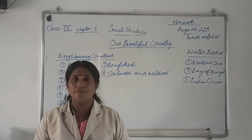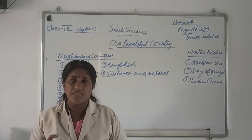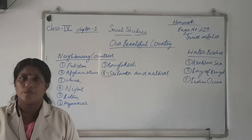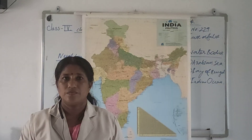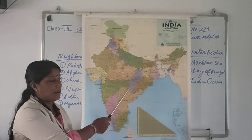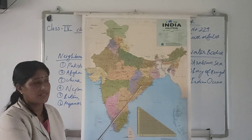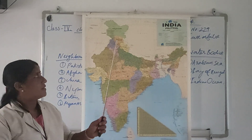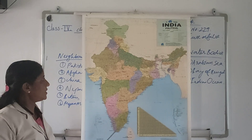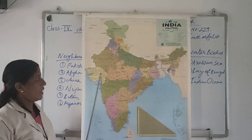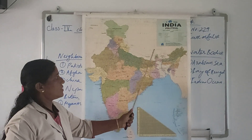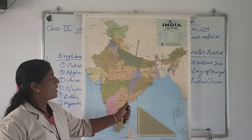In spite of these differences, India has unity. Dear students, this is the political map of India. Here is the northern side, the southern side, the western side, and the eastern side. The northern side is bounded by the Himalayan Mountain Ranges.